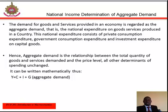National Income Determination of Aggregate Demand. The demand for goods and services provided in an economy is regarded as the aggregate demand — that is, the national expenditure on goods and services produced in a country. This national expenditure consists of private consumption expenditure, government consumption expenditure, and investment expenditure on capital goods. Hence, aggregate demand is a relationship between the total quantity of goods and services demanded and the price level.